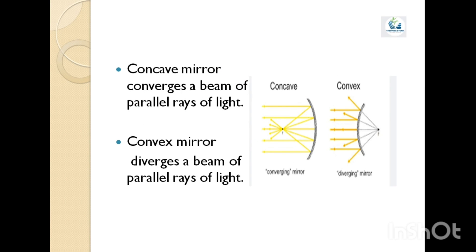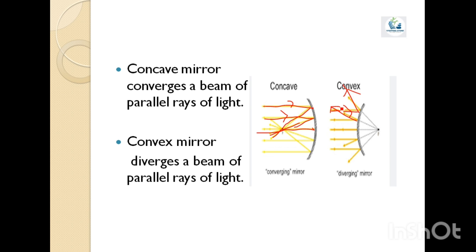A spherical mirror can converge or diverge the parallel rays of light which fall on them. Concave mirrors usually converge a beam of parallel rays of light — after striking the mirror, the reflected rays come closer together and meet at a point, which is called converging. In the case of a convex mirror, the parallel incident rays spread out after striking the mirror. This spreading out is called diverging. So convex mirrors usually diverge a beam of parallel rays of light.